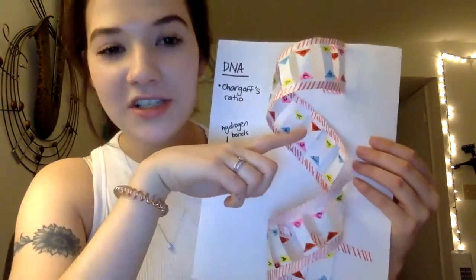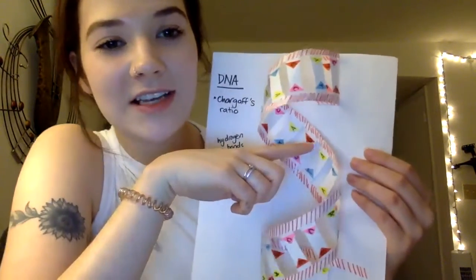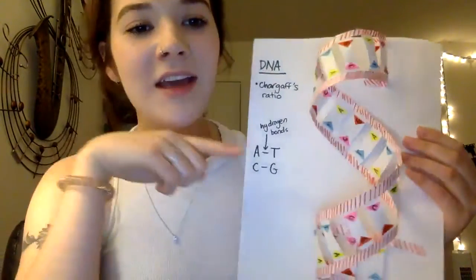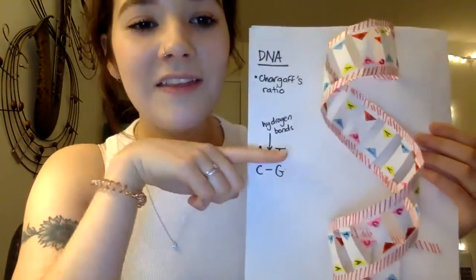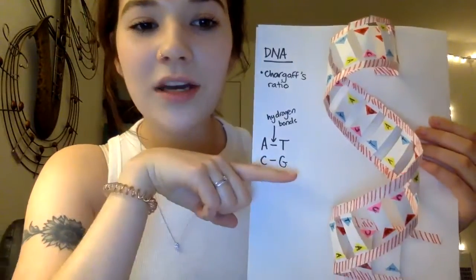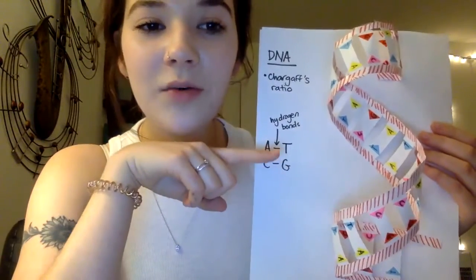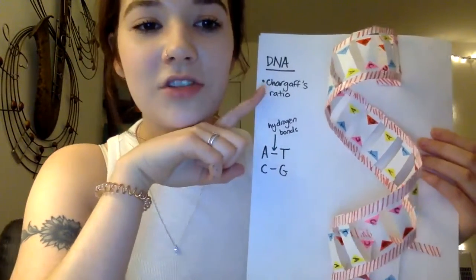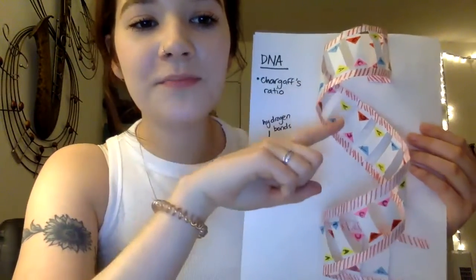It's made up of a phosphate backbone and nitrogenous bases of adenine, guanine, cytosine, and thymine. Adenine and thymine bind together and cytosine and guanine bind together in equal proportions, known as Chargaff's ratio.